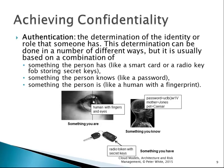We might also use authentication — determining the identity and the role that somebody has. It can be based on something the person has, like a smart card or a radio key fob with a secret key or certificate. It can be something the person knows, such as a password, or something the person is — a fingerprint or iris scan. Username and password is normally regarded as single factor authentication, but as soon as you add fingerprints or smart cards, you move into multi-factor authentication.